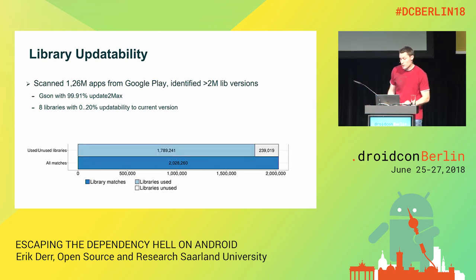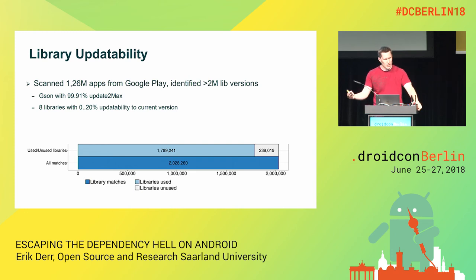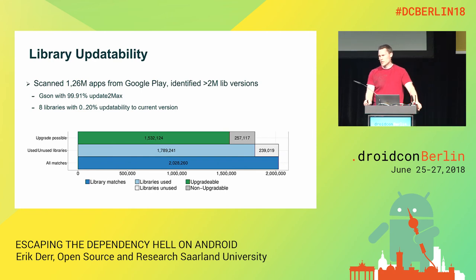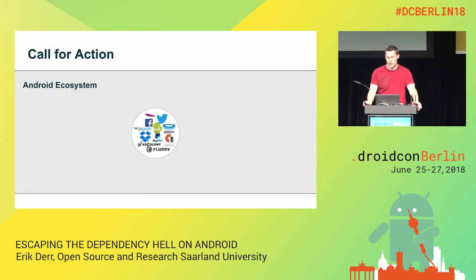To summarize the results: we found 2 million library instances. After filtering unused library code — for instance, where developers forgot to remove it and it was still packaged in the final APK — for the remaining 1.7 million libraries, over 1.5 million could in principle be upgraded without adapting the developer's code. And more than half of those could be upgraded to the latest version simply by replacing the version string.